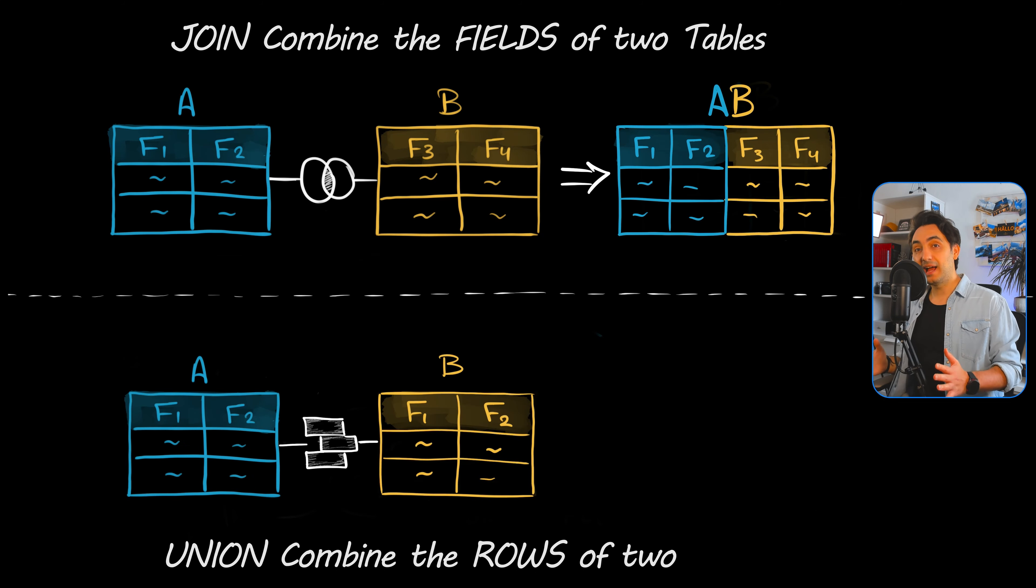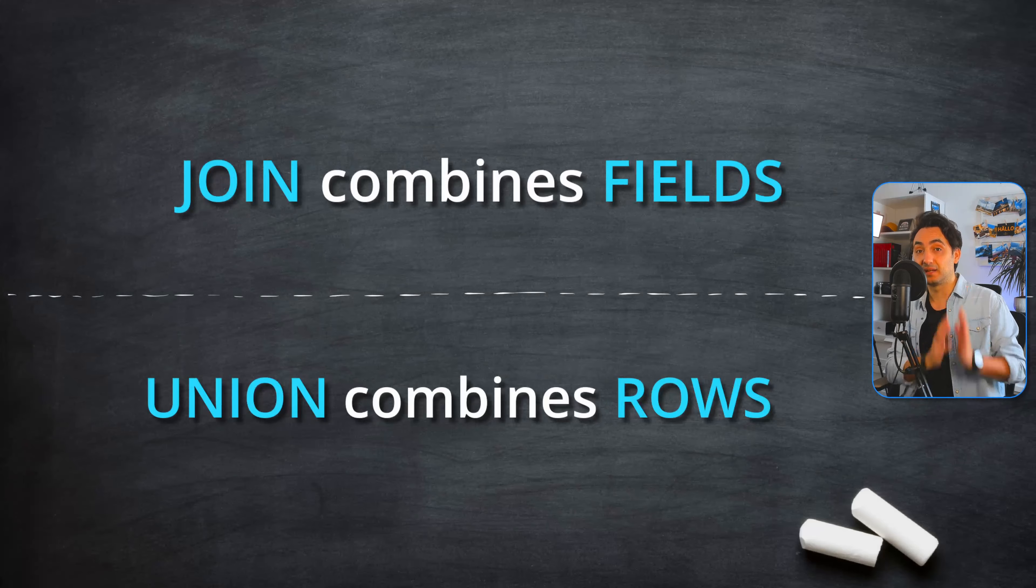But on the other hand, in unions, two tables are going to be combined, but instead of combining the fields, here we're going to combine the rows of both tables. So we will get all the rows from the first table and beneath it all the rows from the right table, but both of them have exactly the same columns.